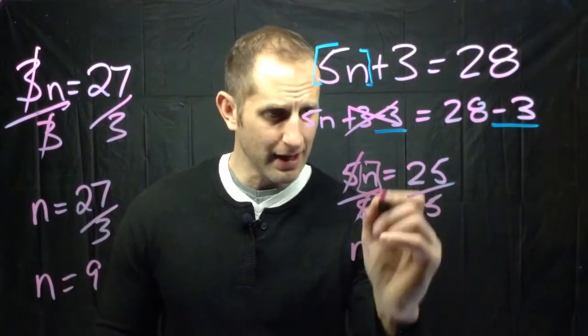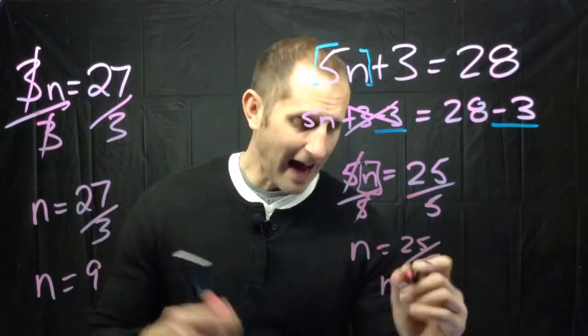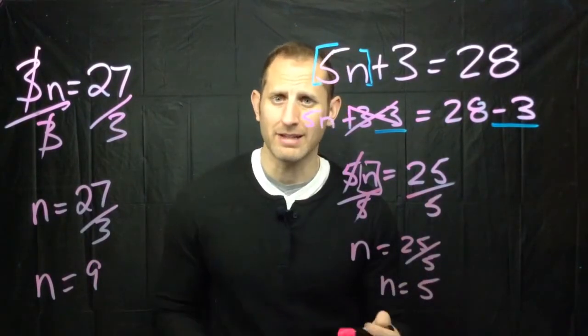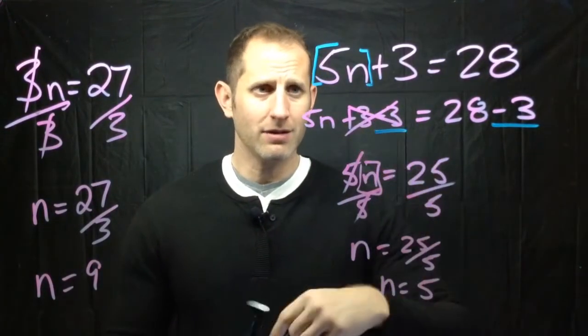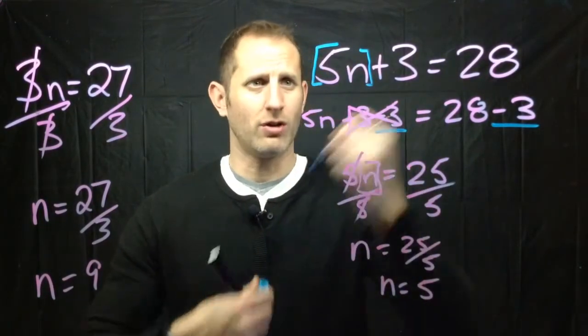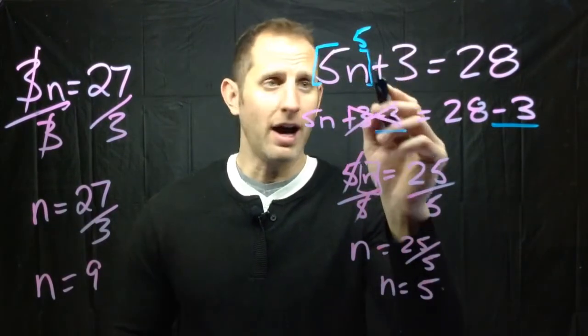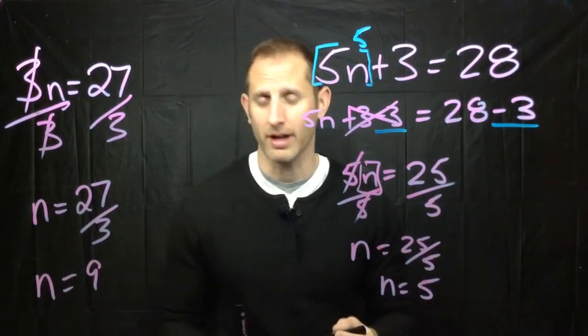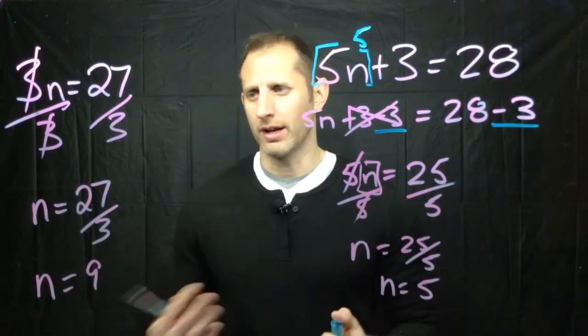1n is equal to 25 divided by 5. Well that means that n has to be worth 5. And then once again if I take and plug in 5 back all the way up here into n. So if I just take that and switch it out to 5. 5 times 5 is 25 plus 3 is 28. I know that it works and I've checked my answer. So this is solving 1 step and 2 step algebraic expressions.